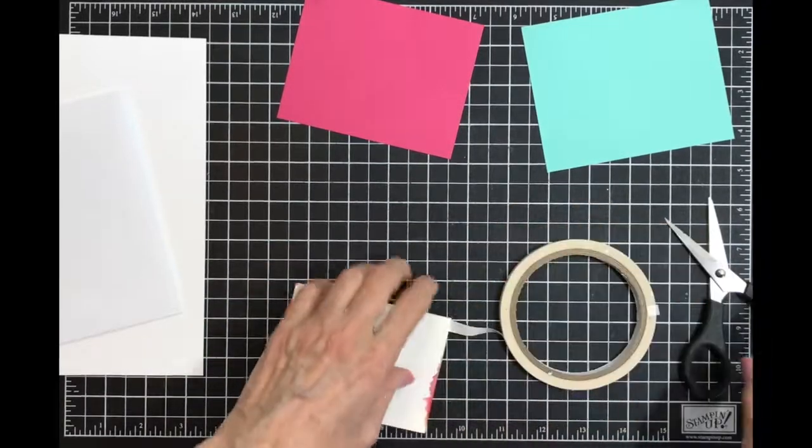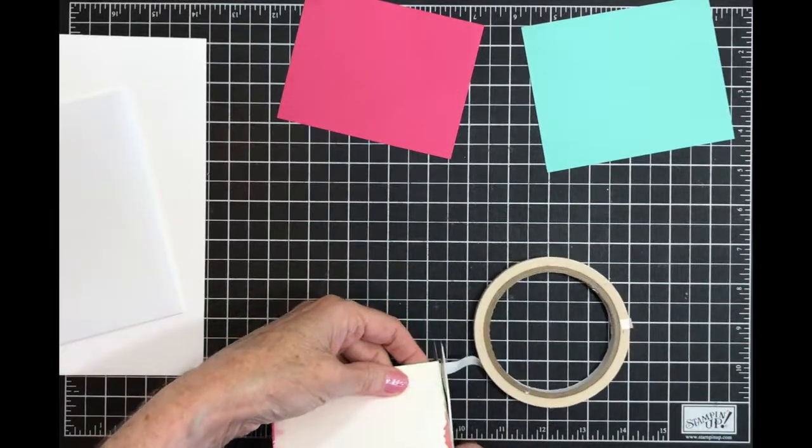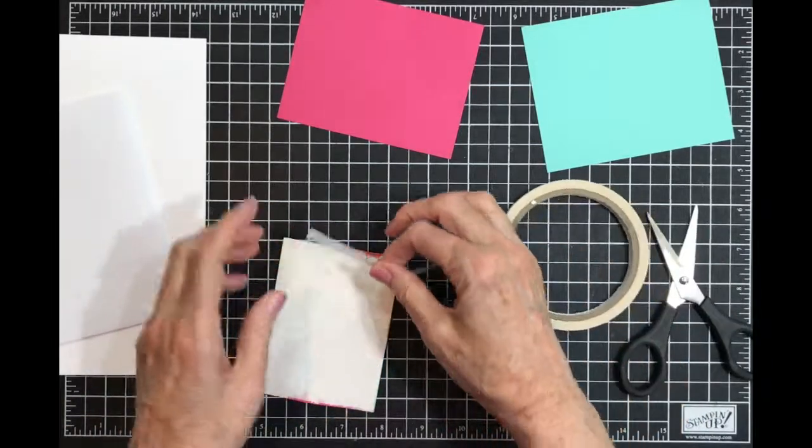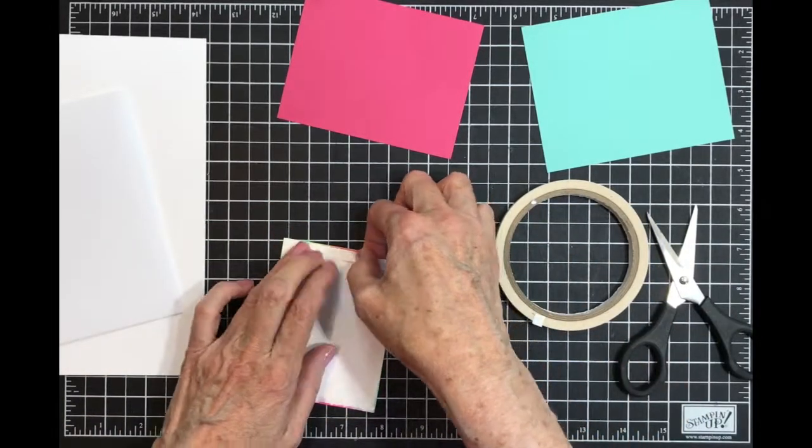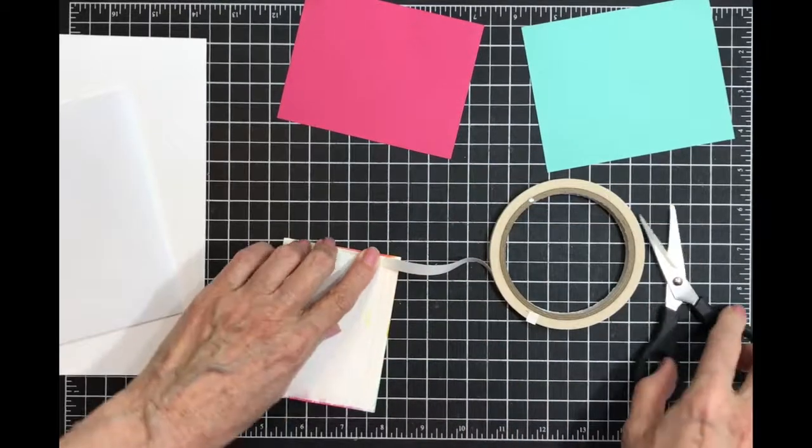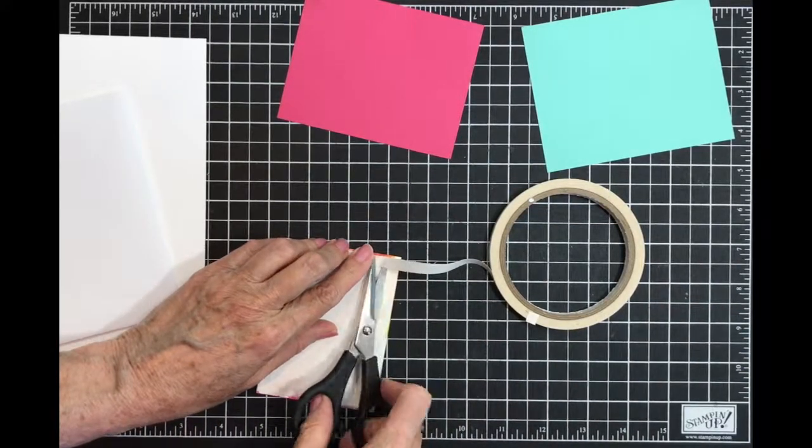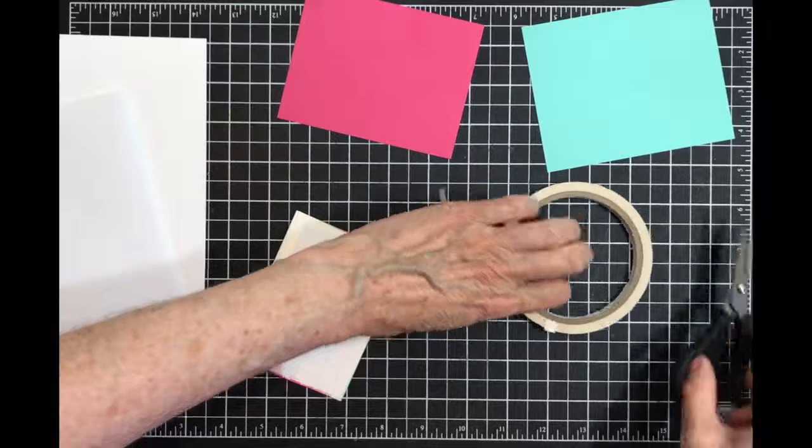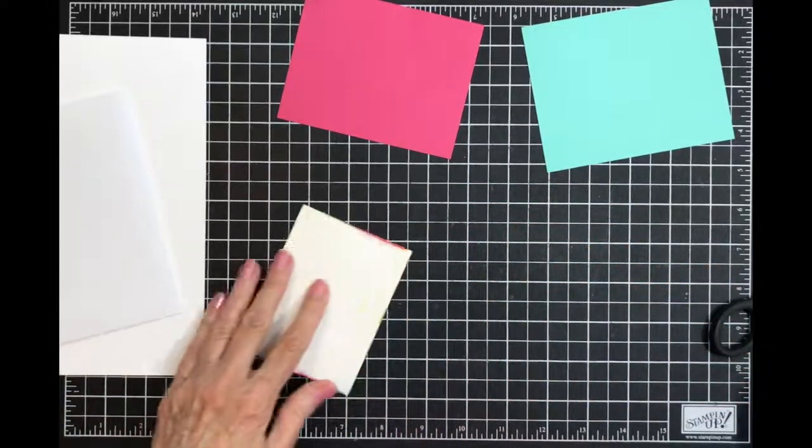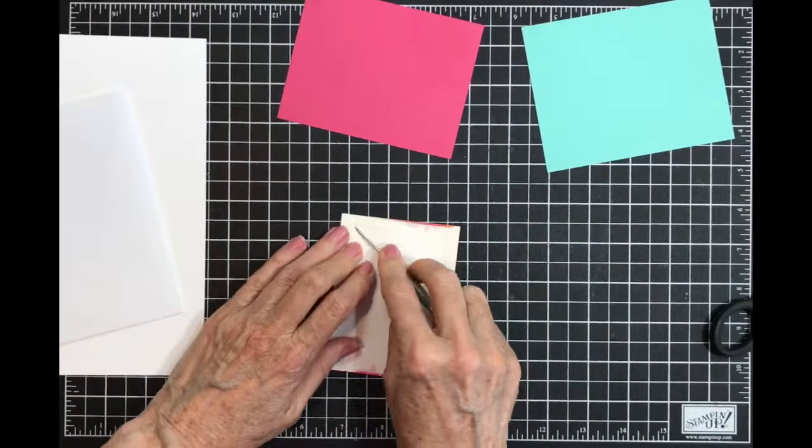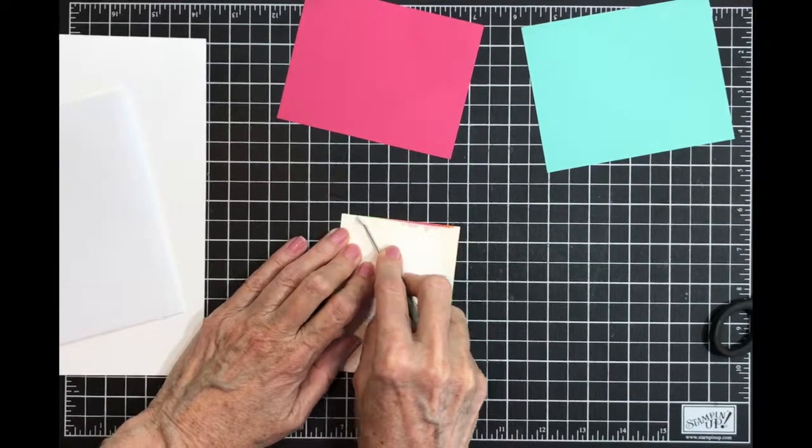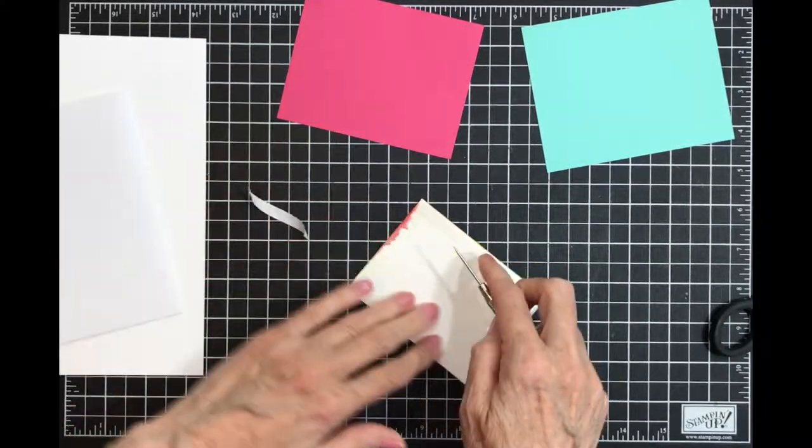This is when the Stamparatus would be perfect, but I don't have the Stamparatus and I'm not planning on getting it anytime soon because with my move, the less I have to move the better. So I'm going to make sure my ends are down and I'm going to use my pokey tool to take off my backing.